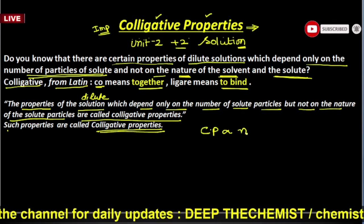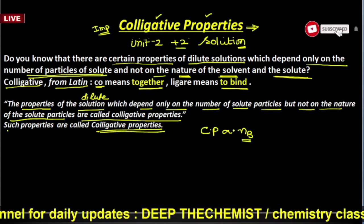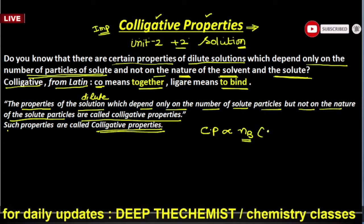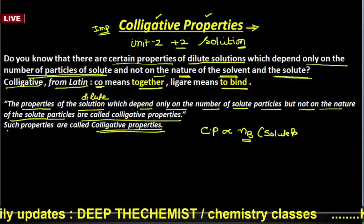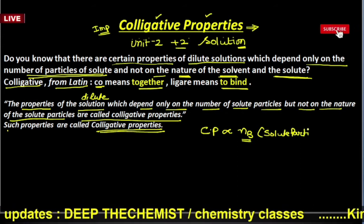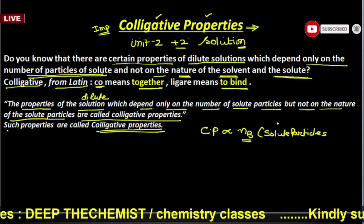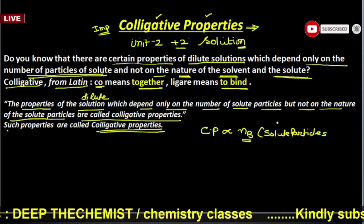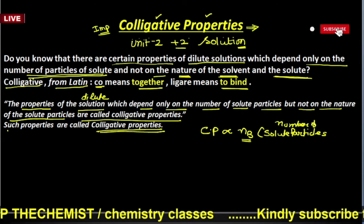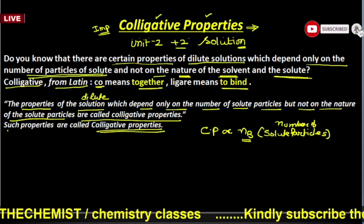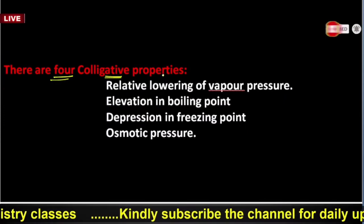Here I write NB, which represents the number of solute particles. The colligative properties depend on the quantity — the number of solute particles — not on their nature.